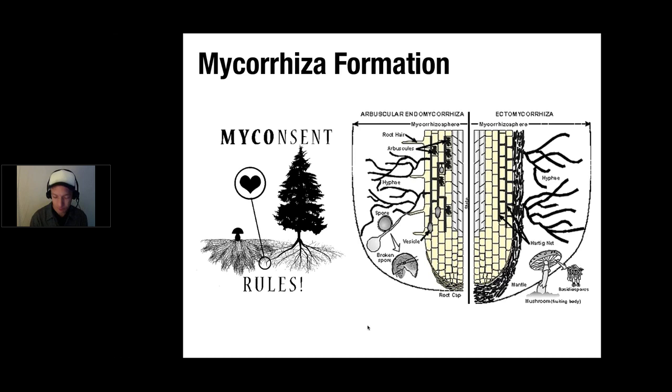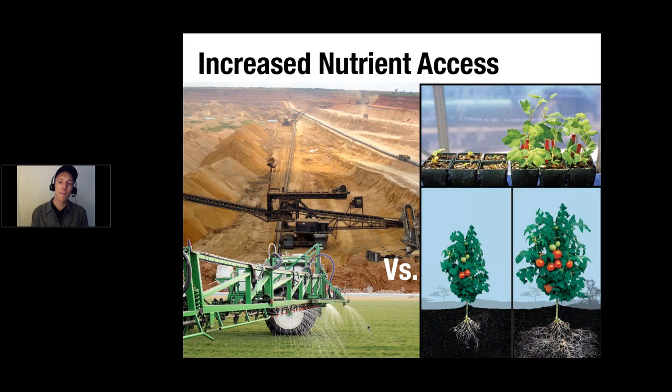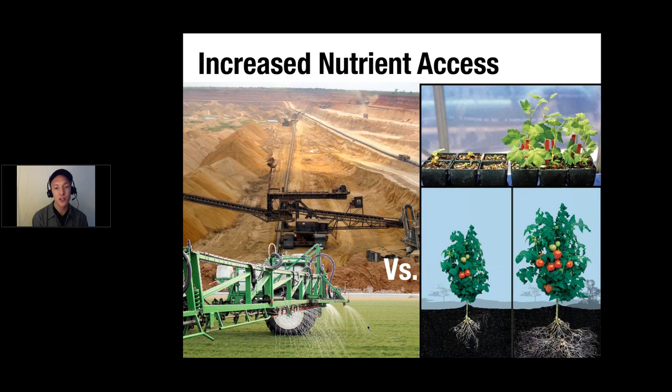Generally speaking, mycorrhizal fungi do lots of things in the environment. One of the main roles is providing nutrients. Our attempts to provide nutrients to plants artificially — in the most extreme case, strip mining phosphorus rock, dipping it in acid to release the phosphorus, all to create a water-soluble form — is mimicking what fungi naturally do. Fungi naturally use their acids to release phosphorus from rock and provide it to the plant. We can significantly reduce our fertilizer input and all the environmental impacts that can come along with those inputs. There are lots and lots of studies leading to higher nutritional content, medicinal quality, flowering rates in the plant, greater growth rates and survival time, and even shortening the time it takes the plant to reach maturity.